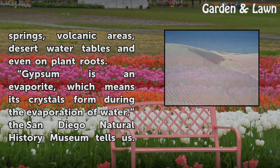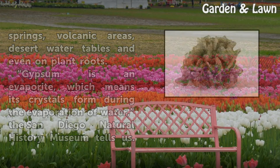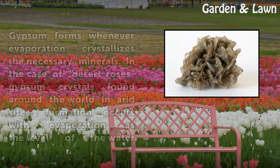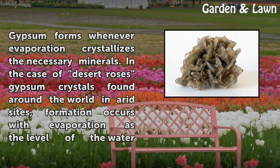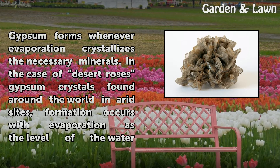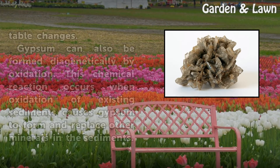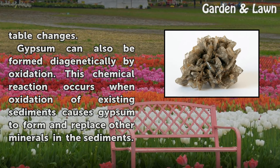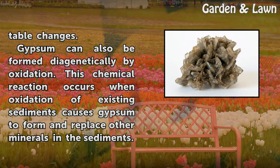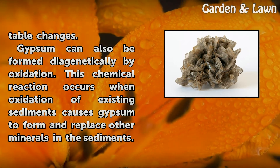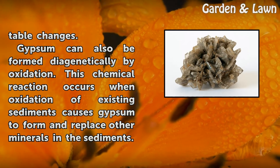Gypsum is an evaporite, which means its crystals form during the evaporation of water. The San Diego Natural History Museum tells us gypsum forms whenever evaporation crystallizes the necessary minerals. In the case of desert roses — gypsum crystals found around the world in arid sites — formation occurs with evaporation as the level of the water table changes.